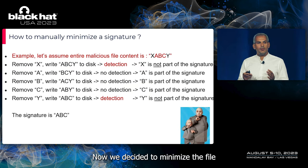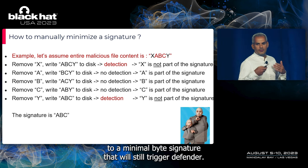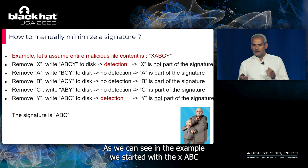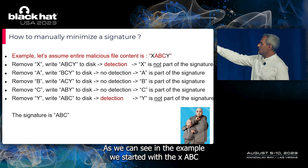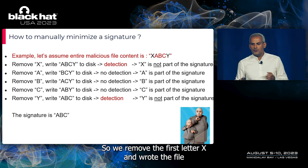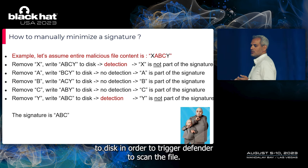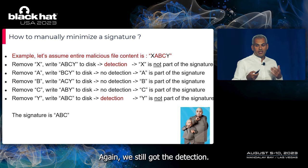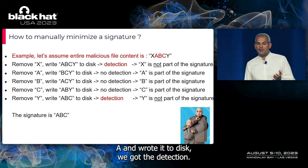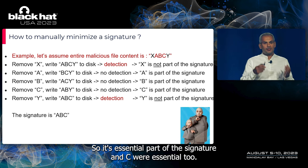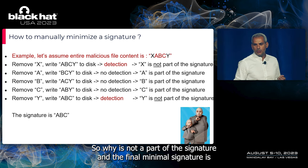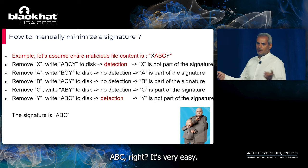We decided to minimize the file to a minimal byte signature that would still trigger Defender. Here's a simple example of our technique: we start with the string 'xabcy', which is a detected signature. We remove the first letter 'x' and write the file to disk to trigger Defender to scan again — still got a detection, so 'x' is not part of the signature. When we removed 'a', we got no detection, so it's essential. 'b' and 'c' were essential too. Removing the last 'y' still gave a detection, so 'y' is not part of the signature. The final minimal signature is 'abc'.